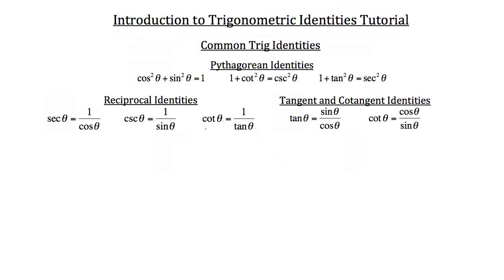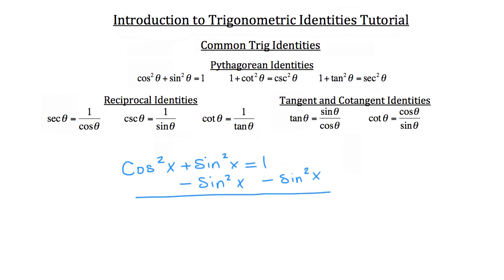You can rearrange these identities if you need to. For example, you could take the cosine squared theta — and by the way, you can also substitute x for theta. So you could say cosine squared x plus sine squared x is equal to 1. You could rearrange that by subtracting sine squared x from both sides of the equation. What you'd have on the left is cosine squared x, because the positive and negative sine squared x cancel. So cosine squared x is equal to 1 minus sine squared x.